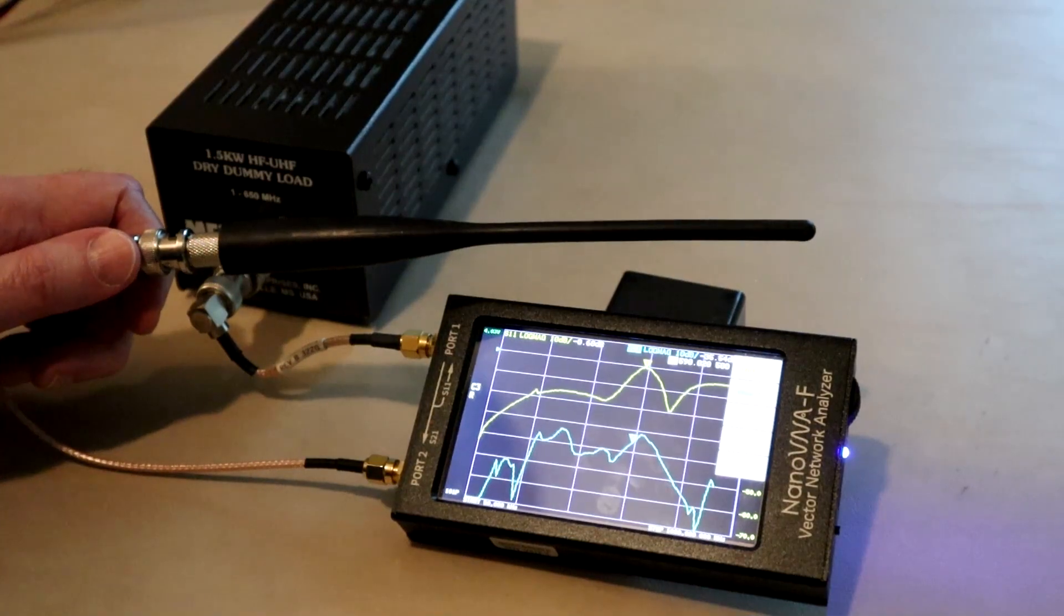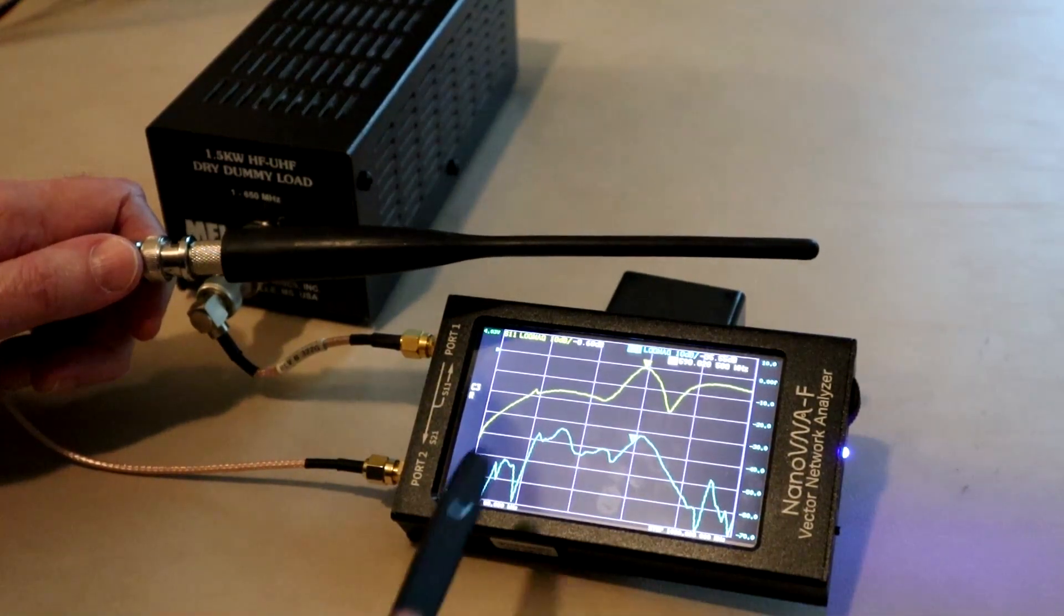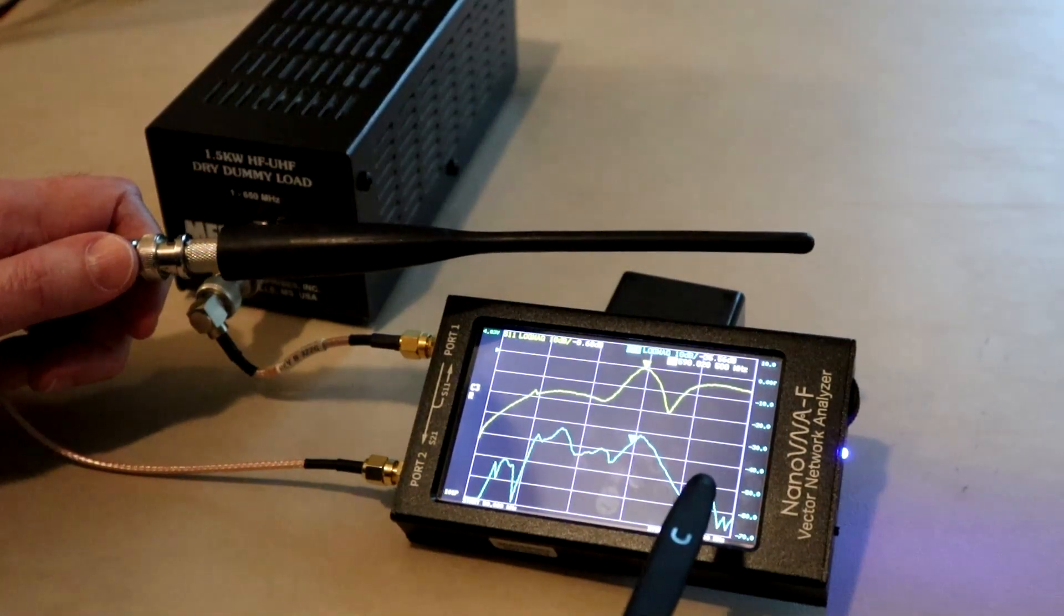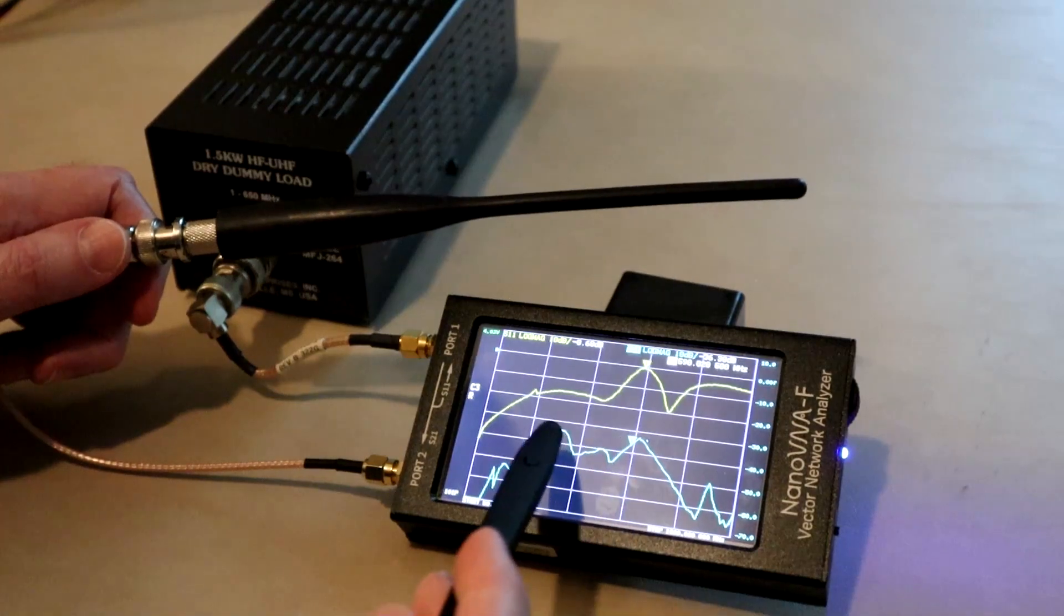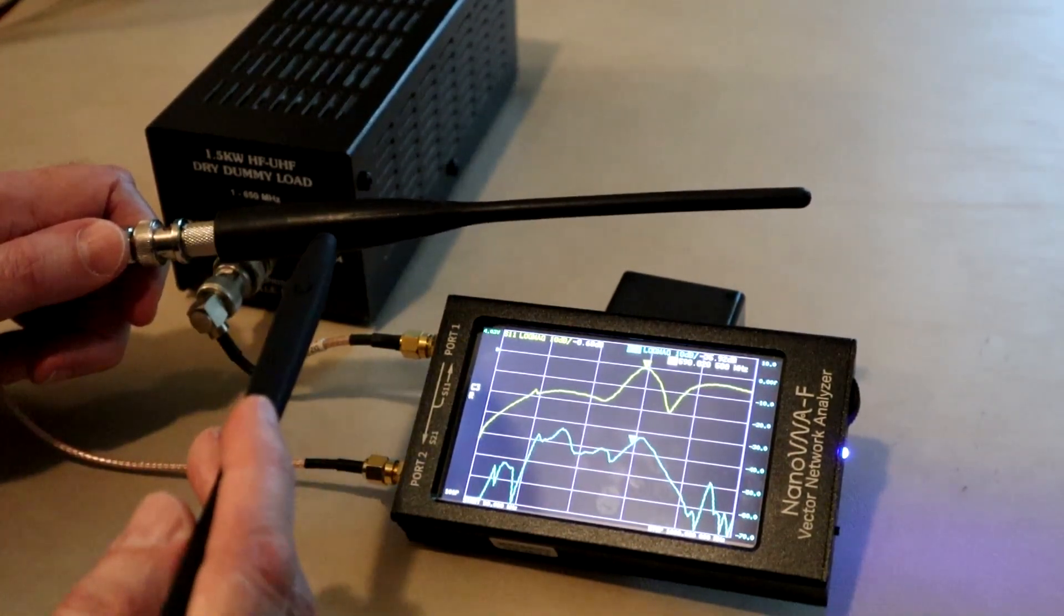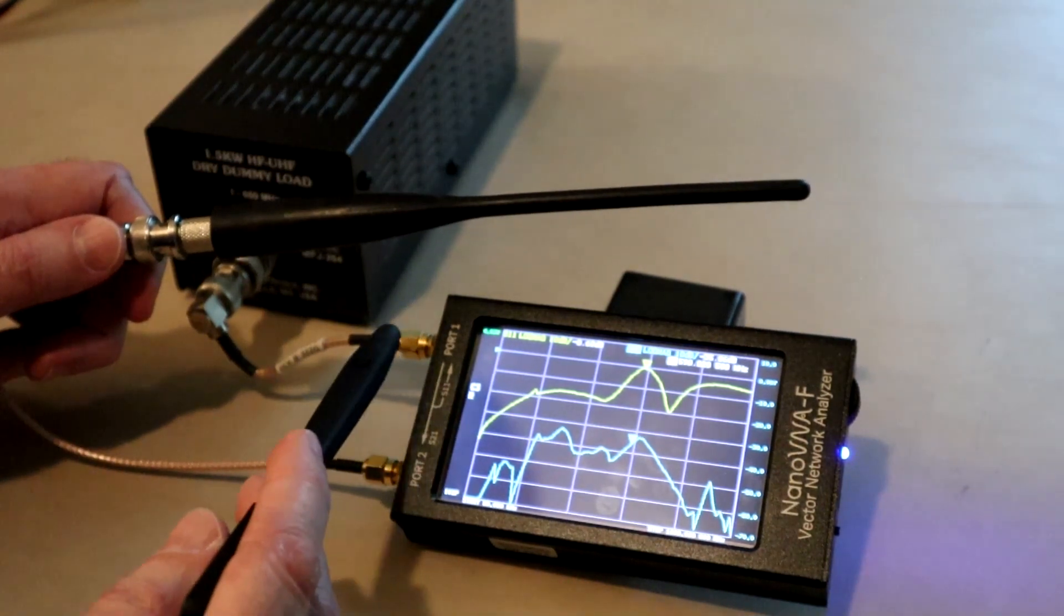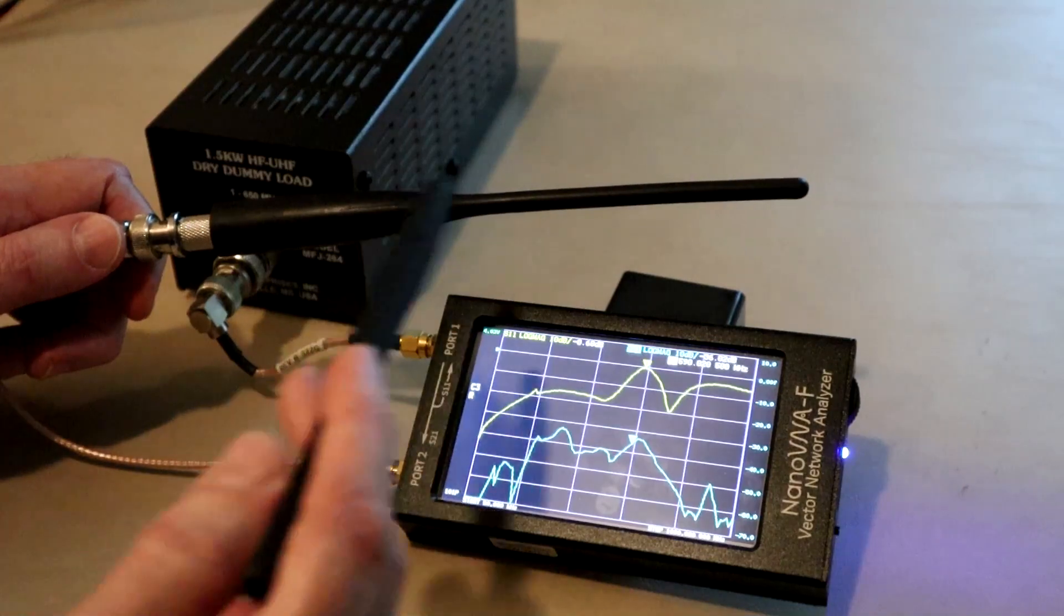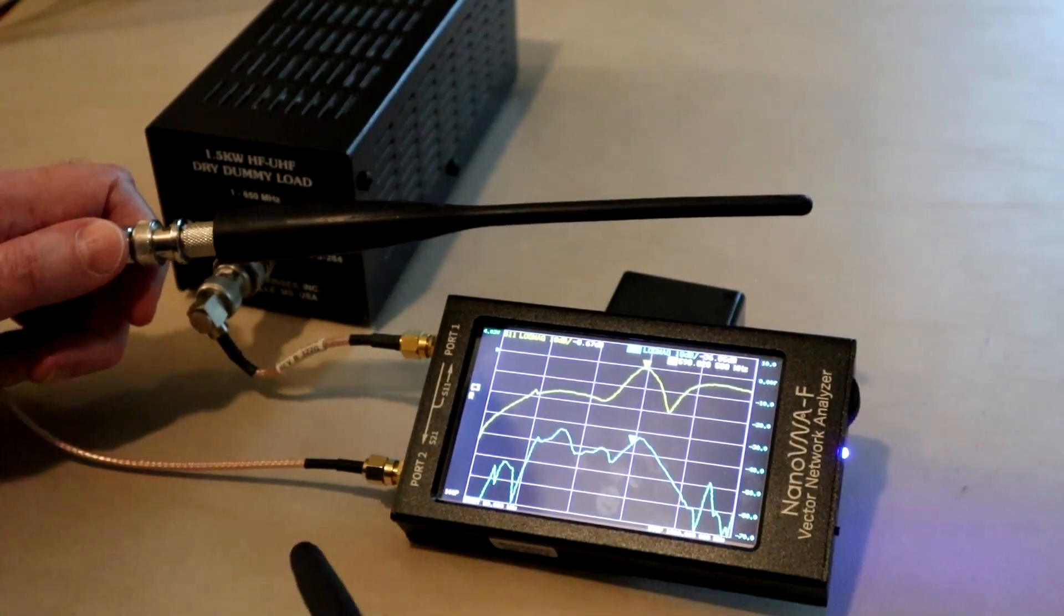So before we end this video, let's take a quick look at measuring S21 with the nano VNA. So I've enabled the S21 trace and that's what we have in blue down here. I've also hooked up port 2 to an antenna. So what we're going to be measuring is how much of the signal from port 1 gets to this antenna and goes into port 2. That's what S21 measures.